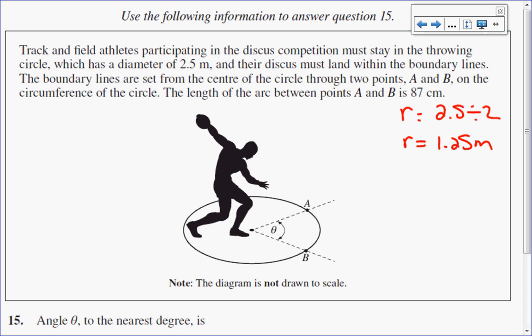Now the discus must land between the boundary lines set in the circle through points A and B on the circumference of the circle. The length of the arc between A and B is 87 centimeters. Now right away I notice a problem. My units are a different value.